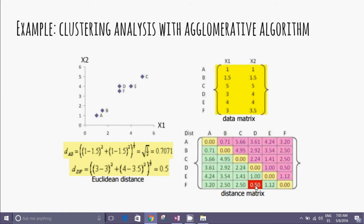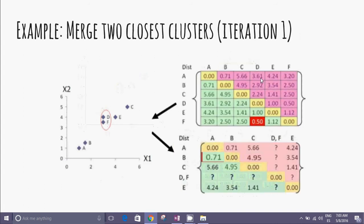And we can find the minimal distance between the elements D and F. D and F have the minimal distance. We can see in the graphic the first cluster.